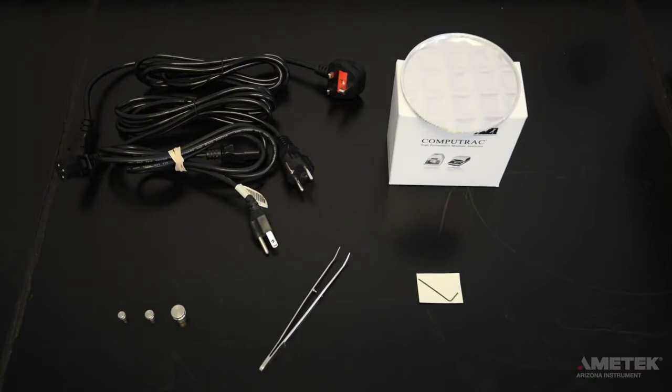The accessory kit for the Max 4000 XL and Max 4000 includes a power cord that meets the requirement of the country in which the instrument will be used, a 3-gram, 5-gram, and 20-gram weight, tweezers, an Allen wrench or hex key, and a box of 100 waffle-type aluminum sample pans.